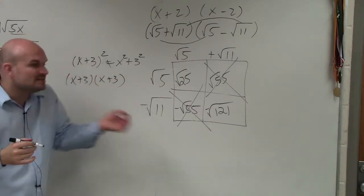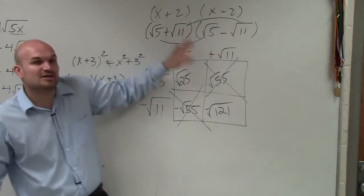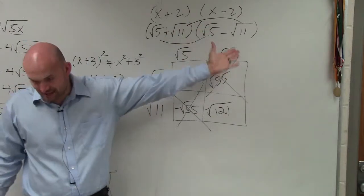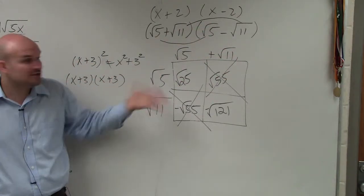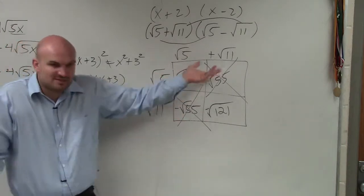So the only time you can use the shortcut is when they're exactly the same, one positive, one negative. But other than that, use the box method. And you can still use the box method, right? These just went to zero.